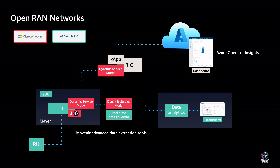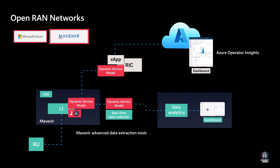Utilizing user-space eBPF codelets with real-time access across the RAN stack, Janus enables dynamic service models where developers define the model through code. In L1 and DU, it exhibits potential for use cases like on-site customizable debugging, interference detection, and energy saving. Mavenir integrated the Janus framework into their end-to-end RAN product, including DU and CU. As a leading open RAN software and technology provider, Mavenir adeptly customized the Janus technology, enhancing DU debugging and introducing services like interference detection.